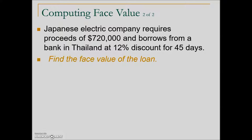Another example: a Japanese electric company requires proceeds of $720,000 and borrows from a bank in Thailand at 12% discount for 45 days. A couple of key words here tell us this is a discount note. They want proceeds of $720,000 with a discount rate of 12%, so we're in the same situation — this company needs to ask for a greater amount so that they have proceeds equal to what they need.